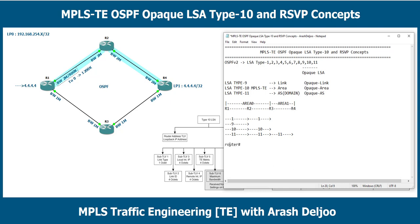To verify the LSDB you can use the command 'show ip ospf database'. There is also an option to specify the LSA type name — for example, to verify LSA type 1 you use 'show ip ospf database' followed by the LSA name.